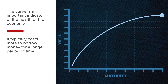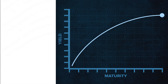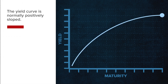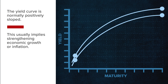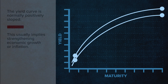The curve gives us important insights regarding expectations for economic growth. It helps us understand where we are in the economy and where we may be headed. Due to the time value of money, typically it costs more to borrow money for a longer period of time. The yield curve is normally positively sloped, implying that it costs more to borrow for longer time periods than it does to borrow in the short term. When the yield curve steepens, the cost of borrowing at far-dated maturities rises by more than the cost of borrowing in the short term, which usually implies strengthening economic growth or inflation.